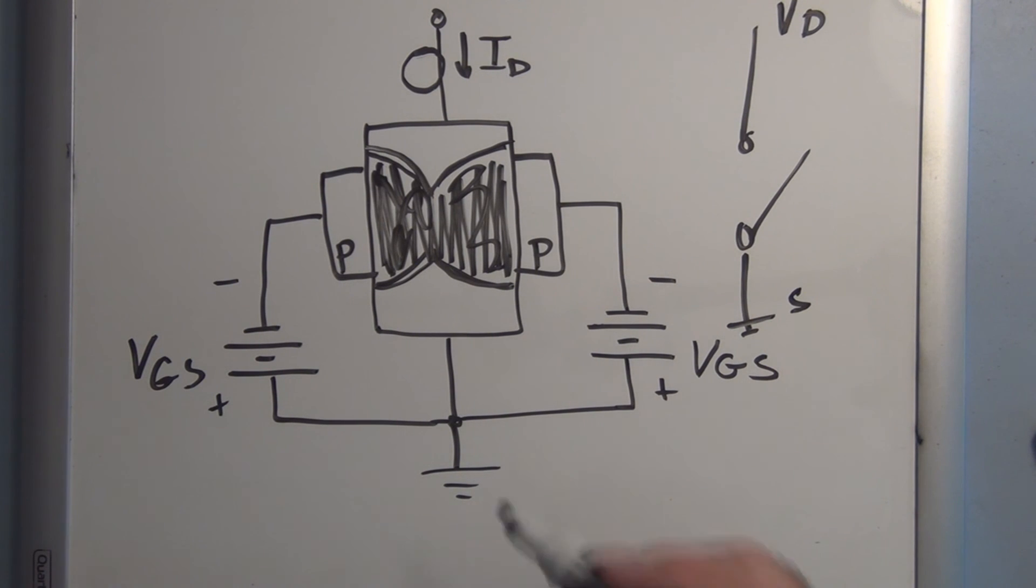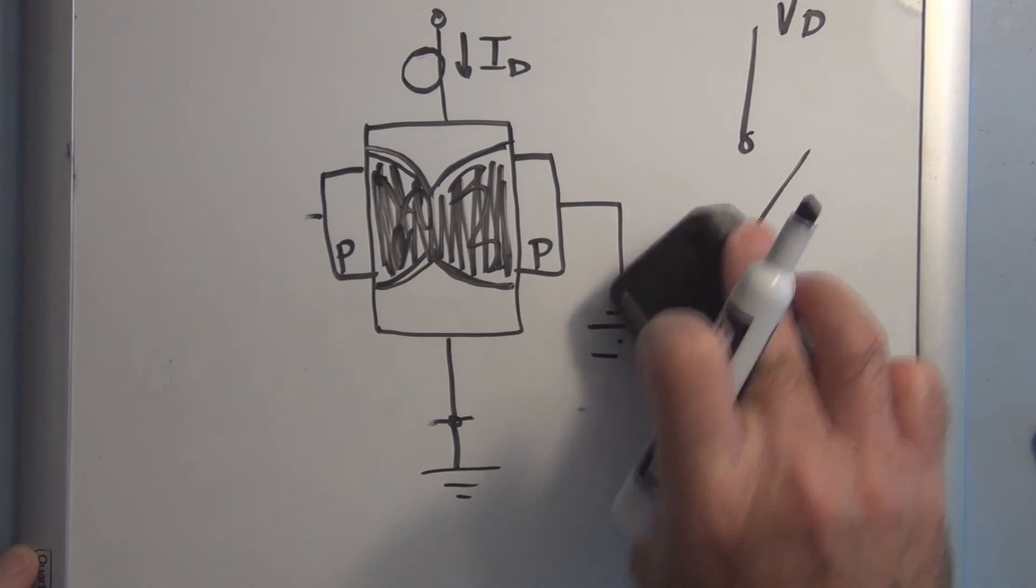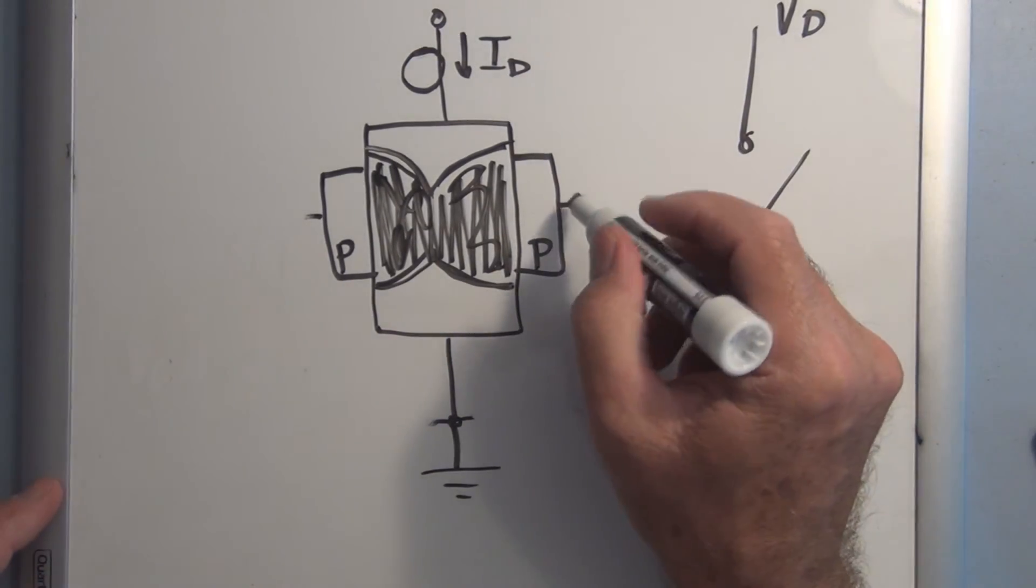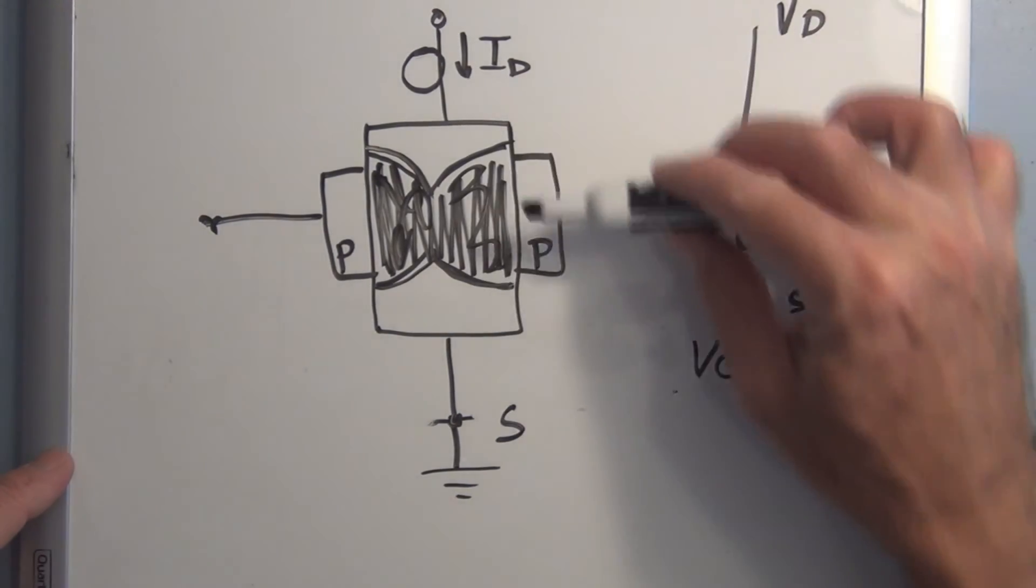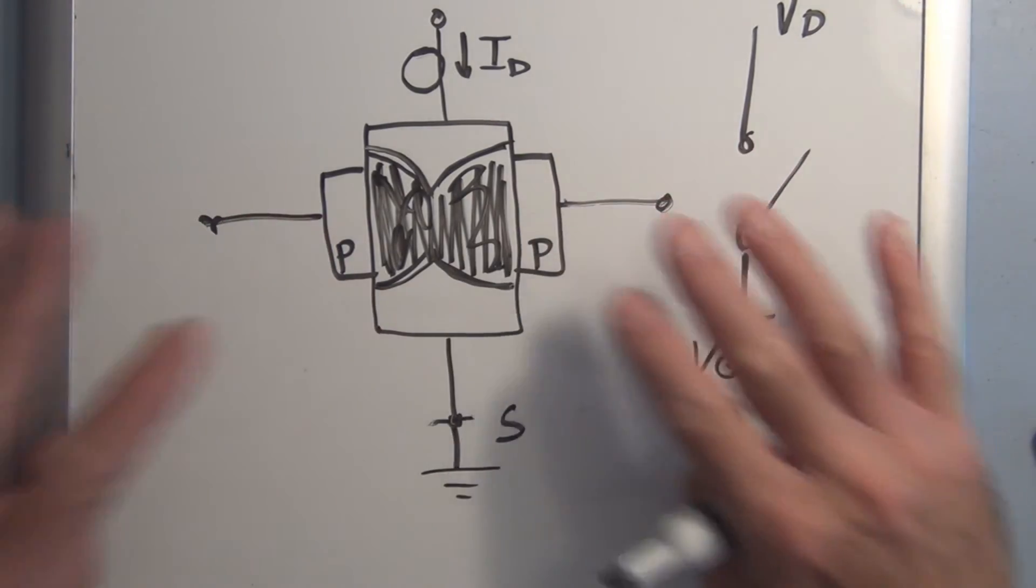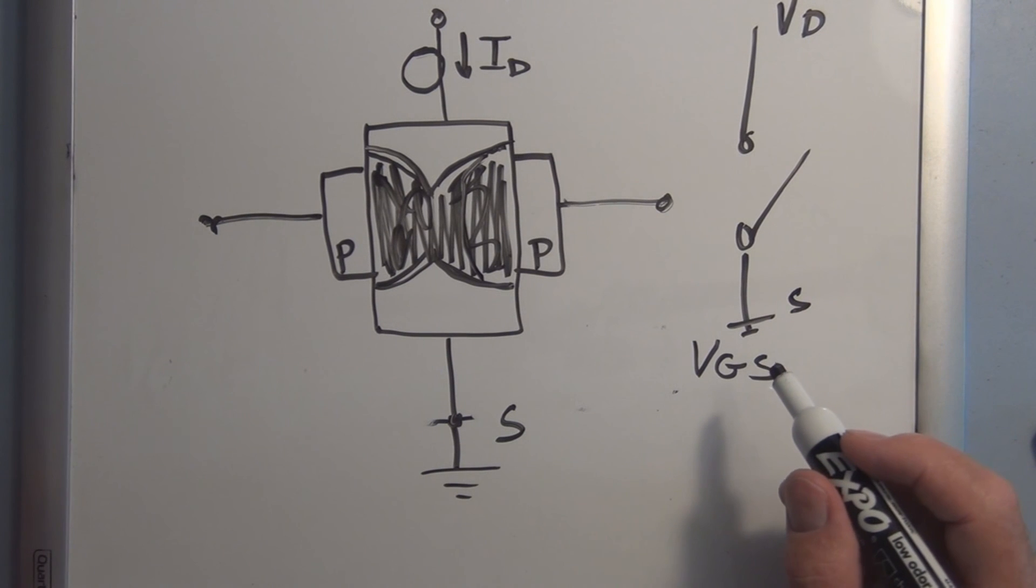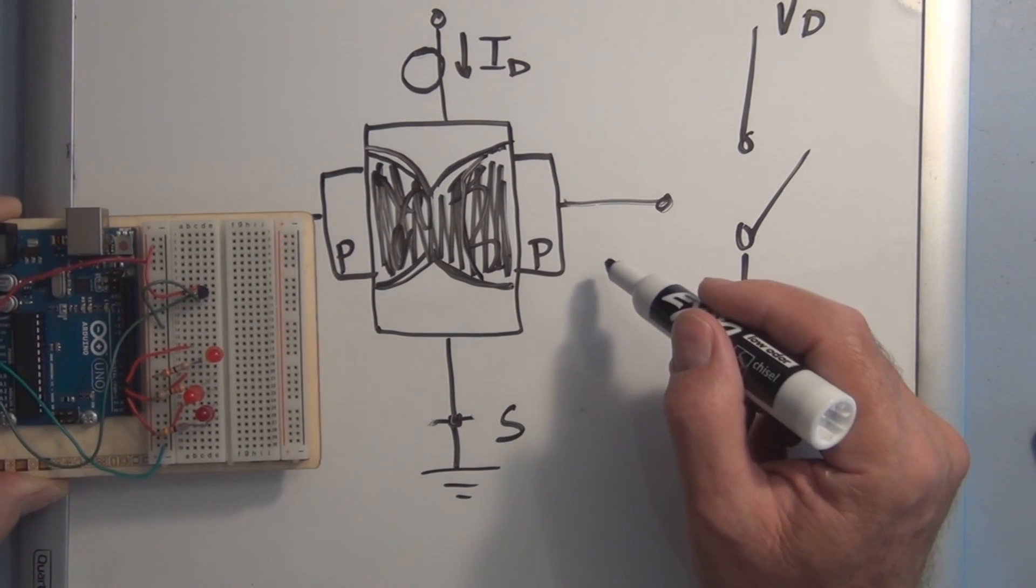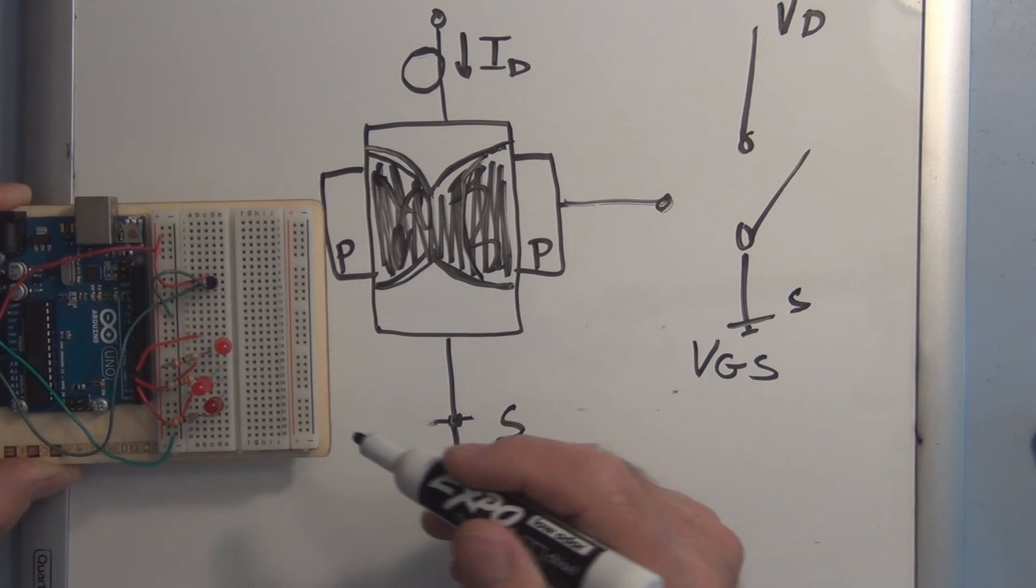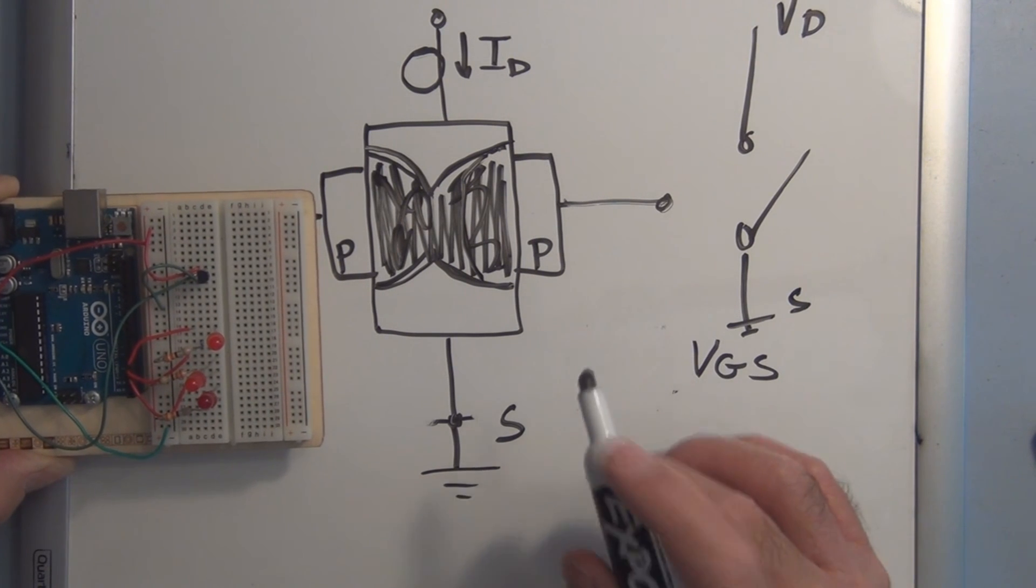But what happens is if you have this floating, if the gate is just floating, the voltage on the gate can fluctuate with respect to the source. This voltage is just moving up and down and even if you get near it you can start creating this field expanding and collapsing. So you have to have your references connected. These two circuits, the motor circuit and the Arduino circuit, have to have the same ground.